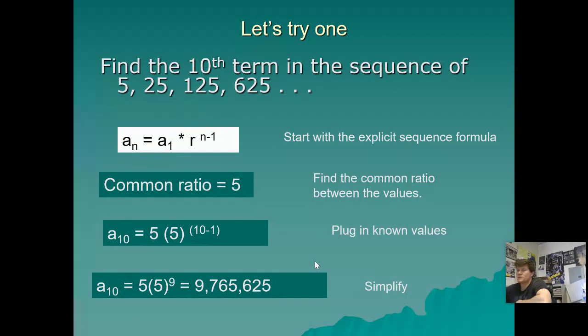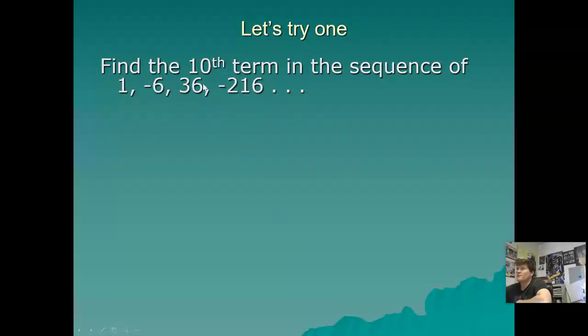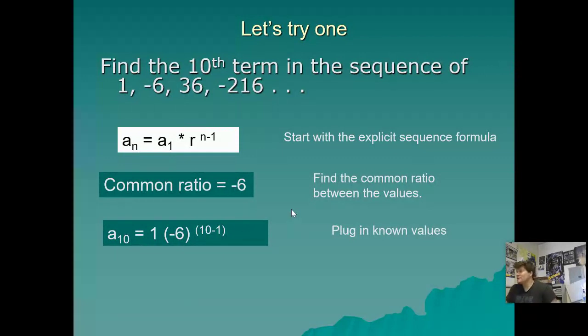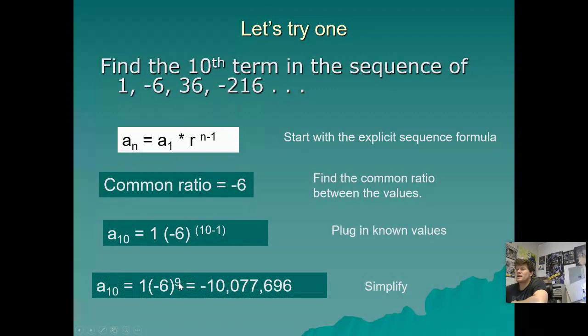Hopefully, it's starting to click a little more. Let's do a different one, though. This one's a little trickier. You have the 10th term again. But you have 1, negative 6, 36, negative 216. Yeesh. Using our formula, what's the first term? First term is 1. What's our common ratio? Oh, it's negative 6. Because our sign is changing every time. Positive to negative to positive to negative. So, let's plug it in. I have 1 times negative 6 to the 10 minus 1 power. You simplify. See if you get the same answer I do. 10 minus 1 makes 9, negative 6 to the 9th power times 1 makes negative 10,077,696.